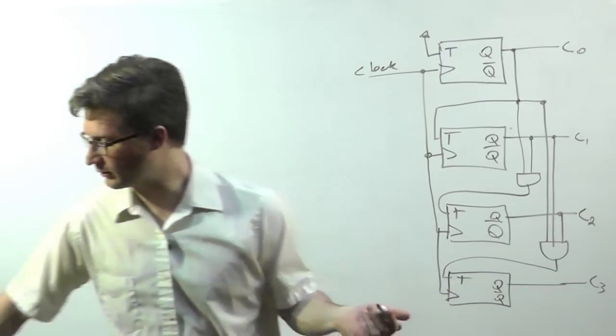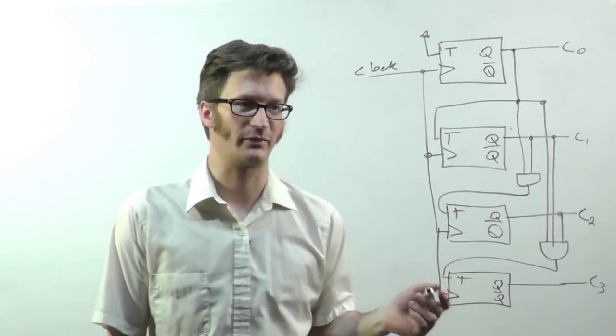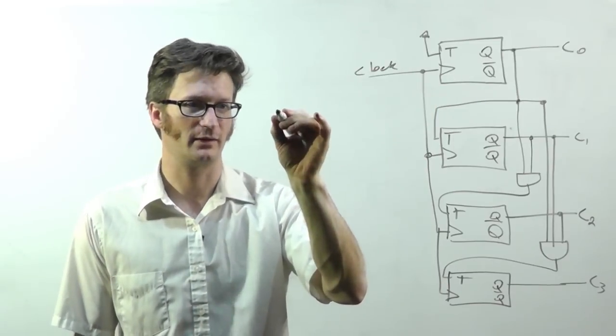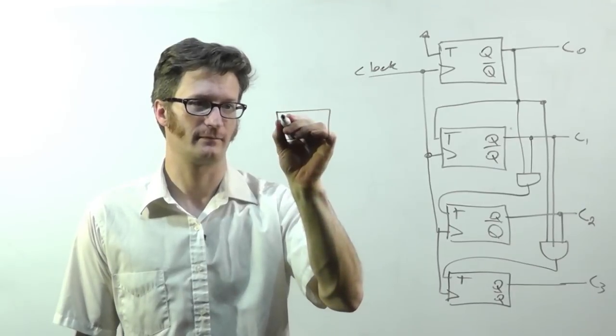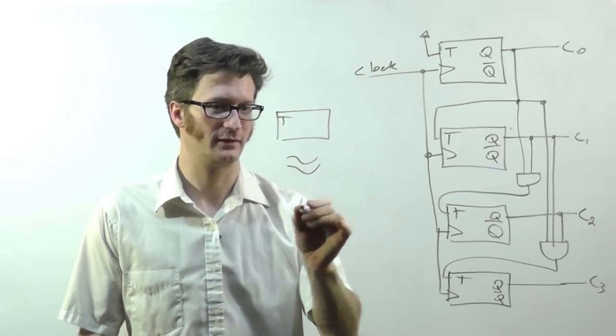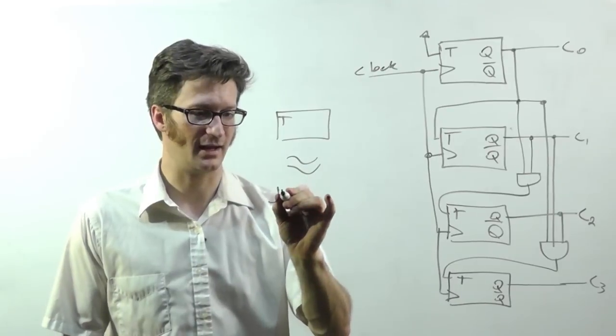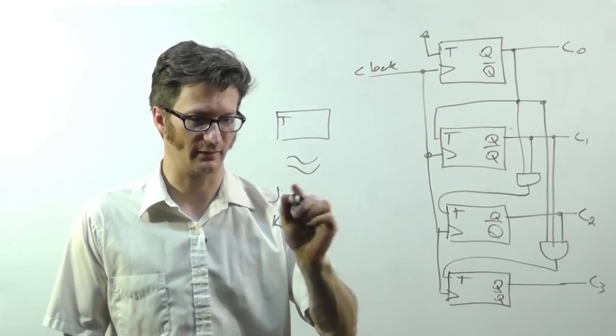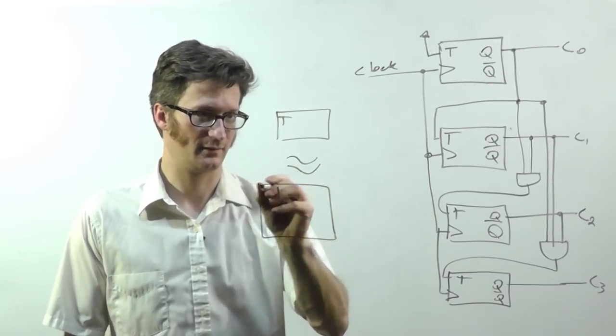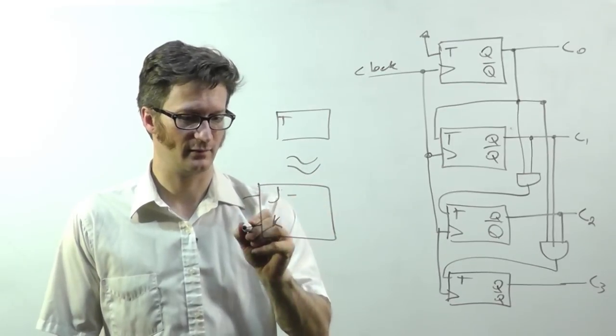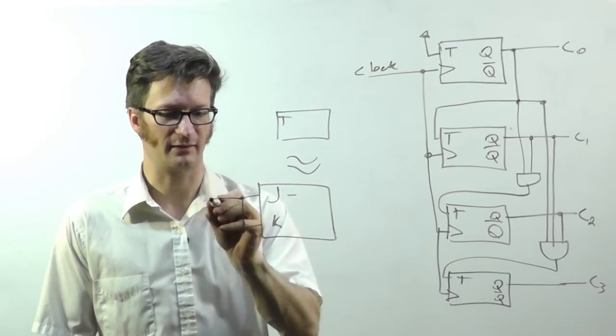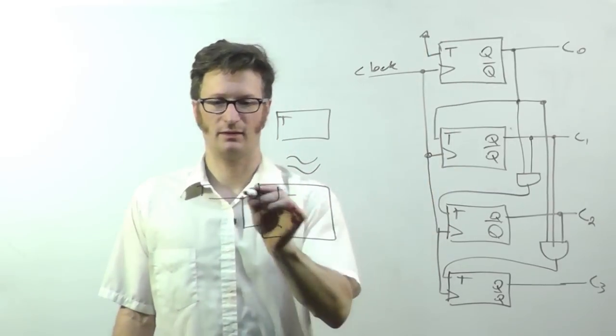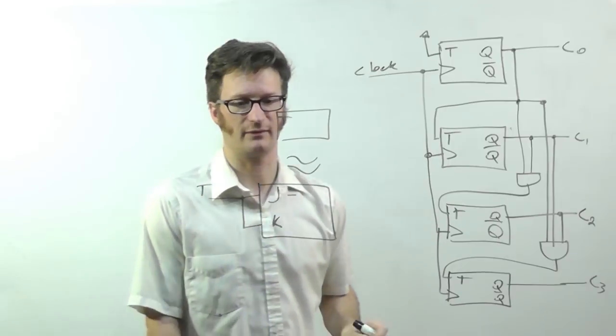So let's say we wanted to make it out of JK flip-flops. Well, as you may recall, a T flip-flop is equivalent to a JK where the lines are simply tied together. So everywhere that I have a T input, just tie it to both ends of the JK.